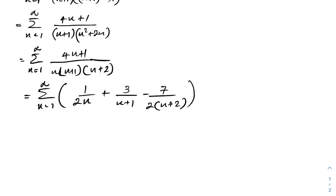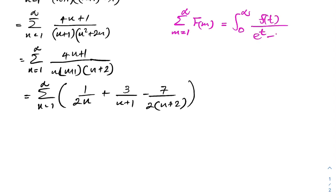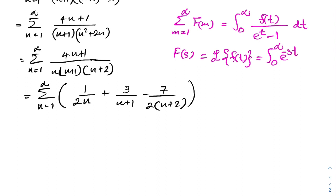Now I am going to use the mass summation identity. The theory states: if we have an infinite series from m equals 1 to infinity of f(m), it equals the integral from 0 to infinity of f(t) over (e^t minus 1) dt, where f(s) is the Laplace transform of f(t), defined as the integral from 0 to infinity of e^(−st) times f(t) dt.